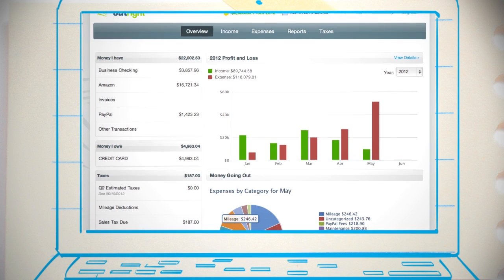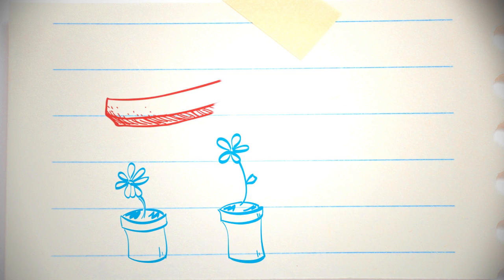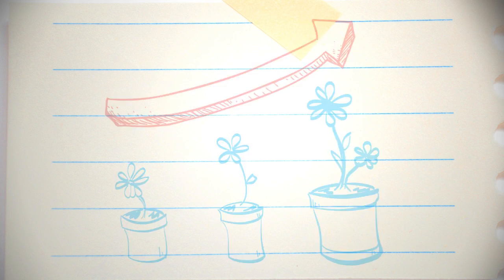Outright is a way for me to organize and keep track of all my finances in one place. With everything organized, I'm able to see my business in new ways.